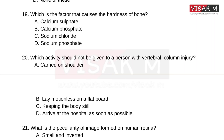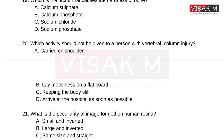Moving on to the next: which is the factor that causes the hardness of bone? Options: Option A, Calcium sulfate; B, Calcium phosphate; C, Sodium chloride; D, Sodium phosphate. The right answer is Option B — Calcium phosphate.